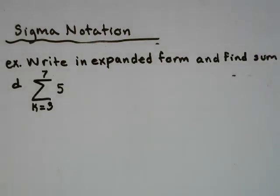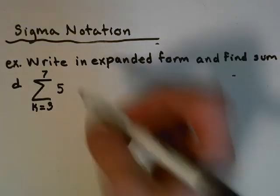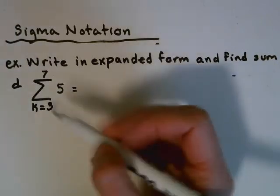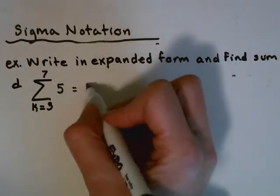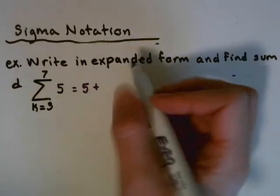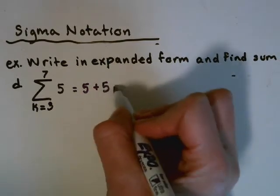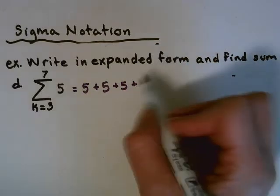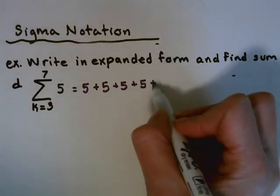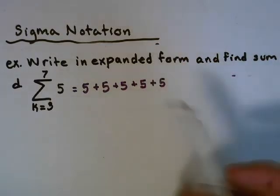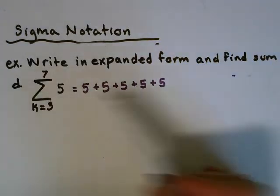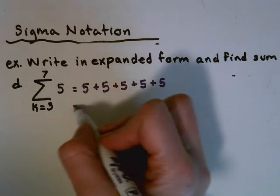Next we have from k equals 3 up to 7 of the constant 5. If I try to plug in values there is no variable, so when k is 3, 4, 5, 6, and 7, the function gives me 5 each time. We have five instances of 5, and we just add those together to get 25.